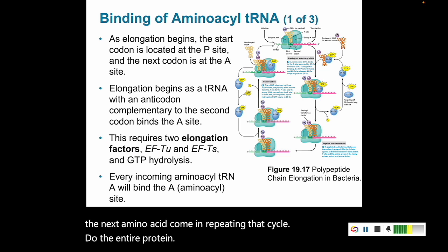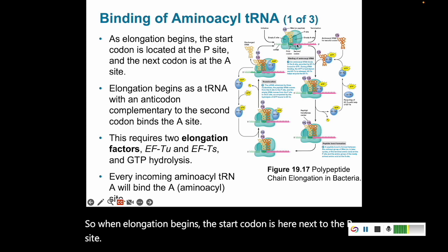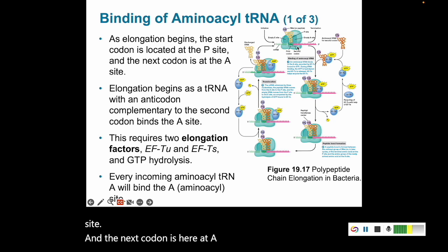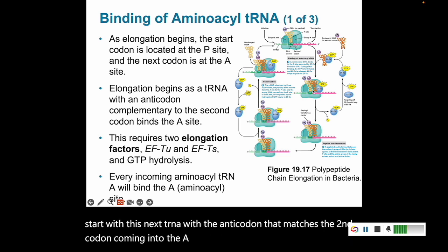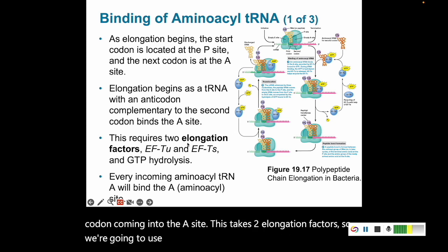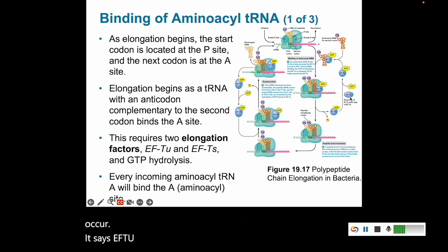When elongation begins, the start codon is at the P-site and the next codon is at the A-site. Elongation starts with the next tRNA, whose anticodon matches the second codon, coming into the A-site. This takes two elongation factors — EF-TU and EF-TS — and it's also going to require GTP hydrolysis.